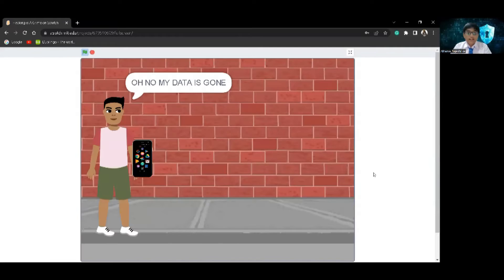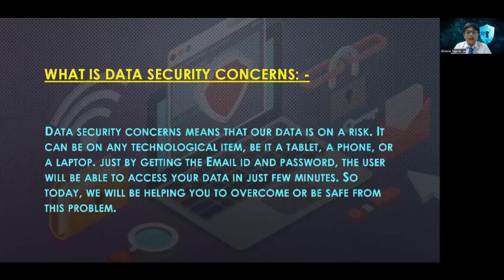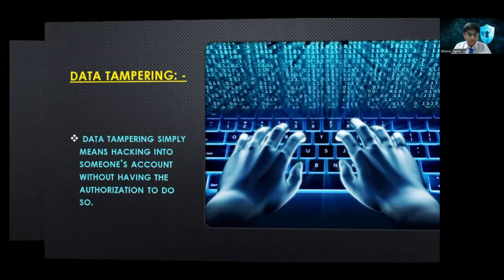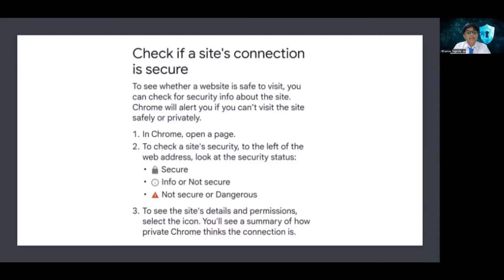The next day, John realizes that all his data is gone and thinks that Ben hacked it. Data security concerns means that our data is at risk on any technological item. Data tampering means hacking into someone's account without authorization. Prevention can happen in two ways: firewalls, which are barriers protecting your data from viruses and threats, and authorization, which is the process of giving permission to access websites, applications, or games. Websites have three icons: a lock icon meaning secure, an info icon meaning possibly not secure, and a caution icon meaning dangerous with threats and viruses.